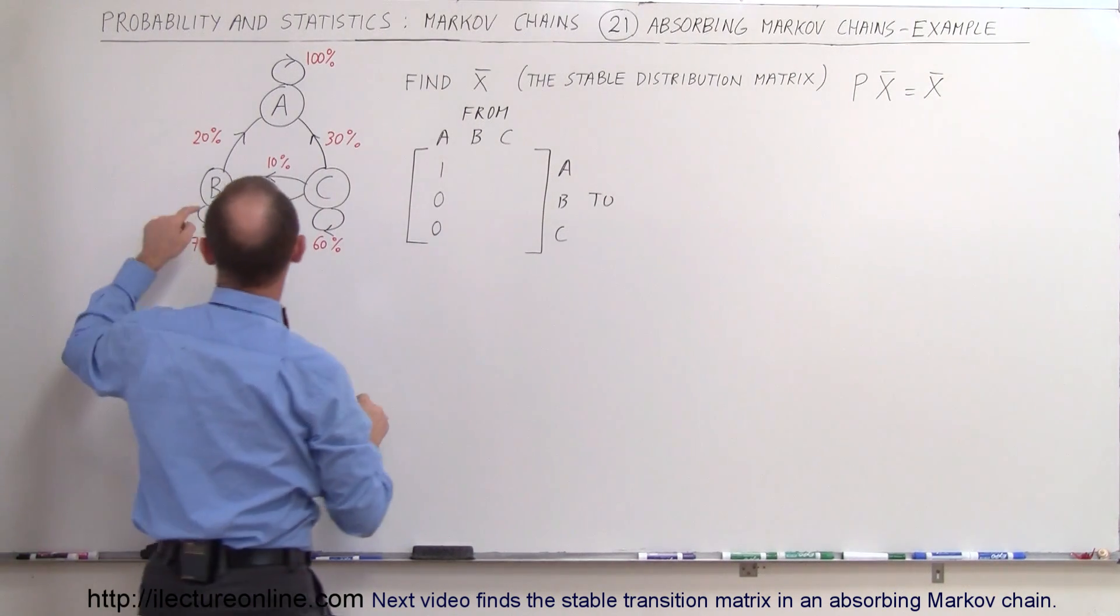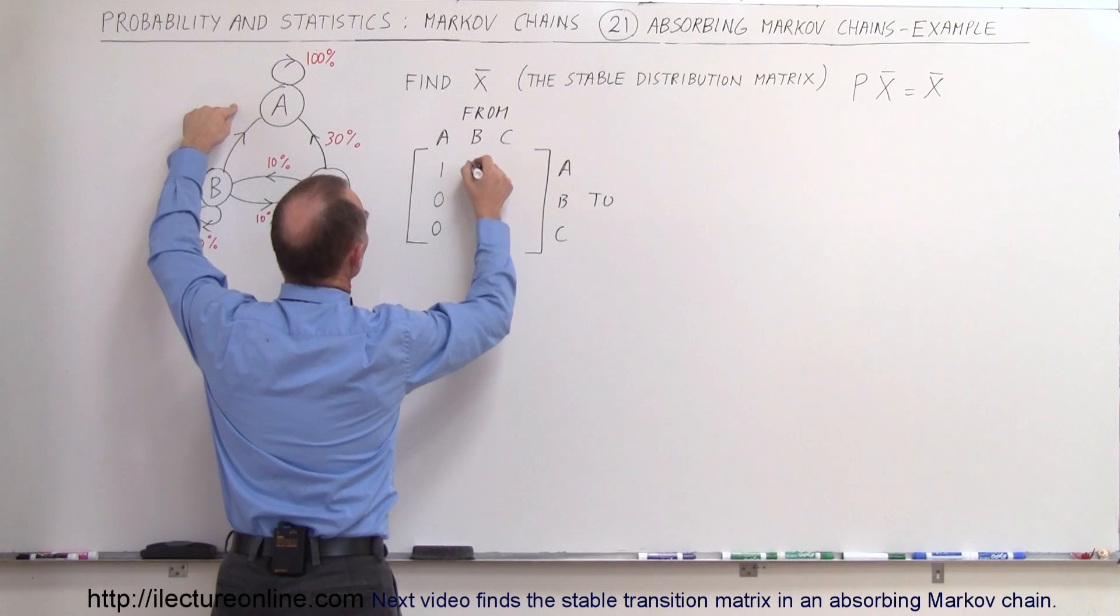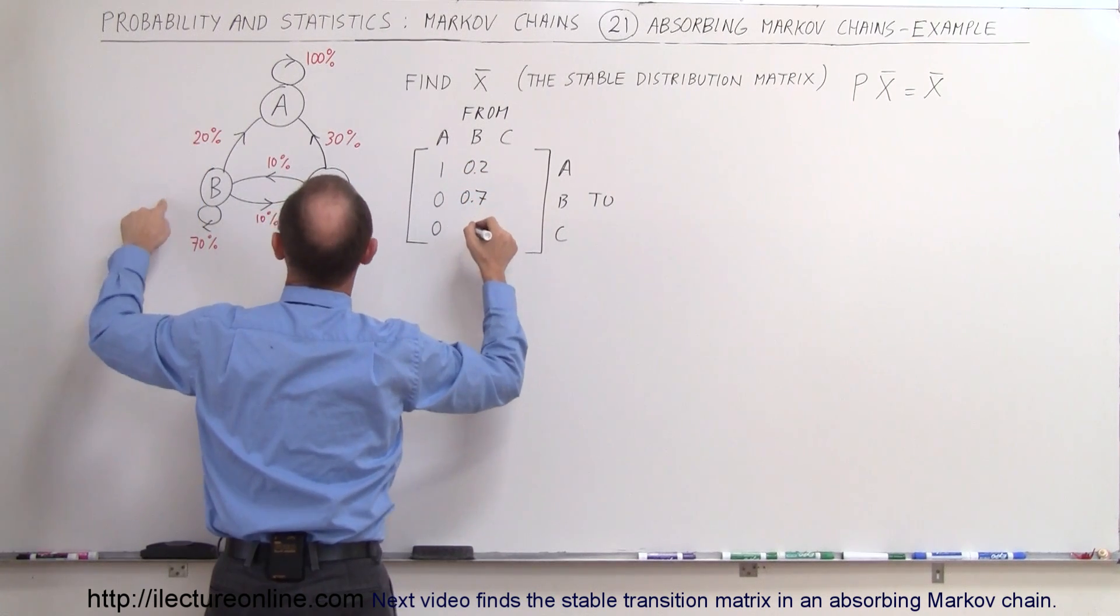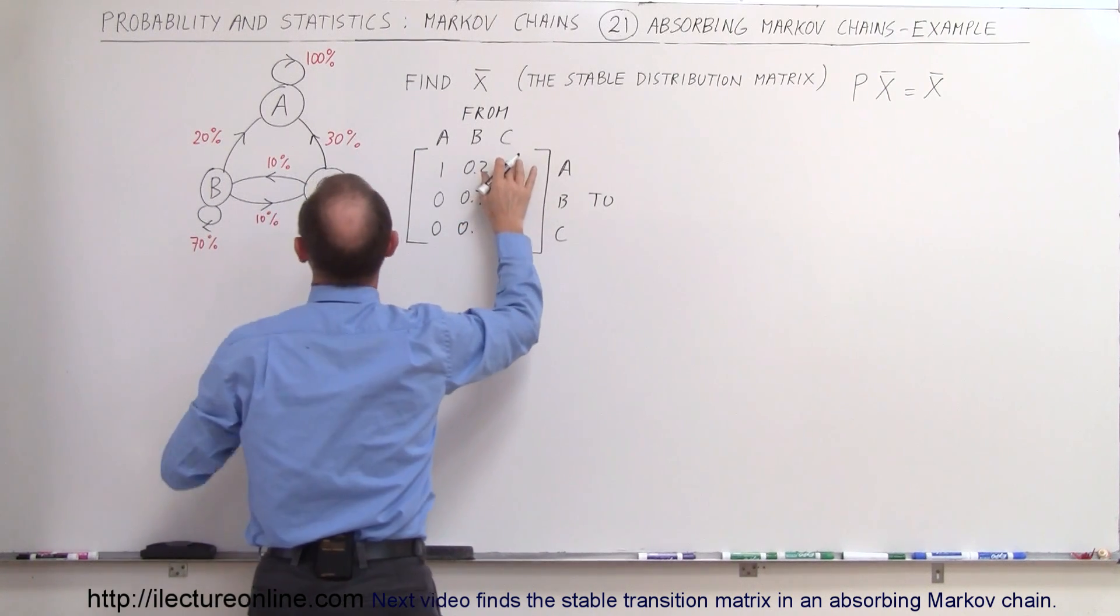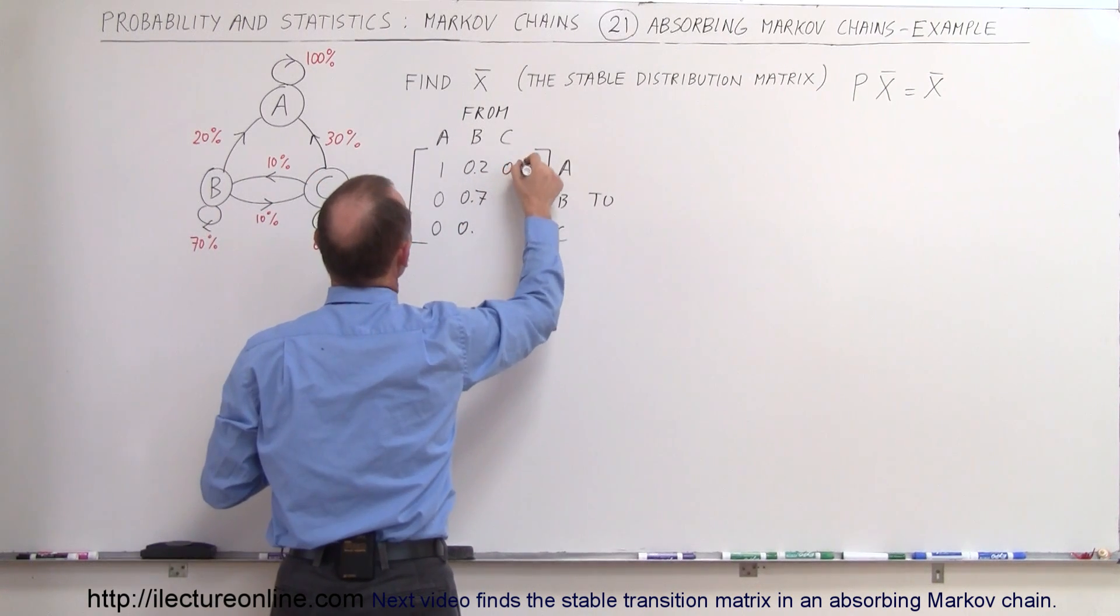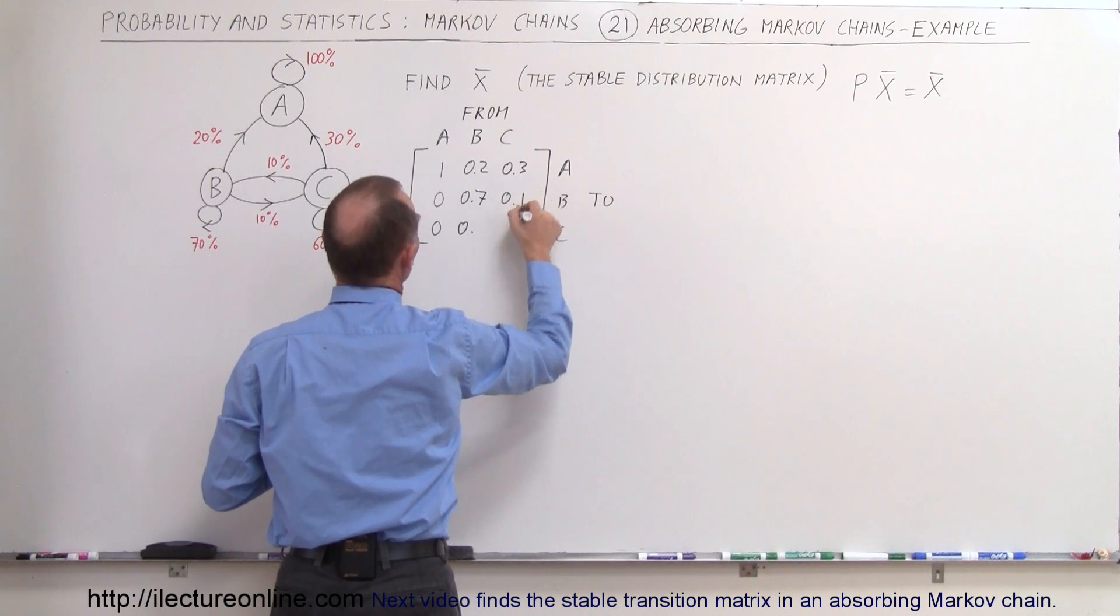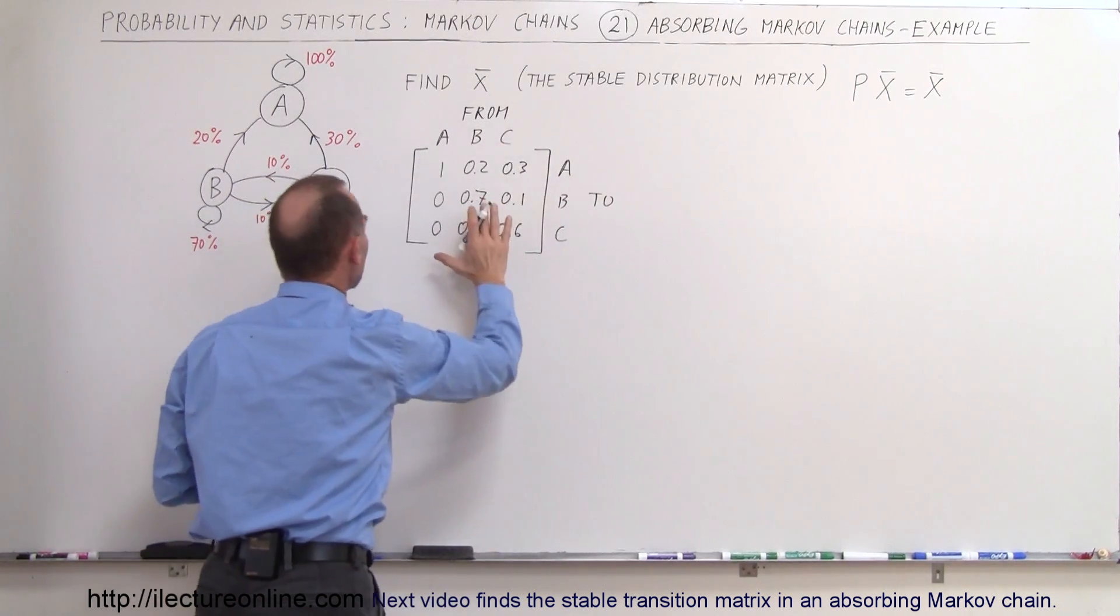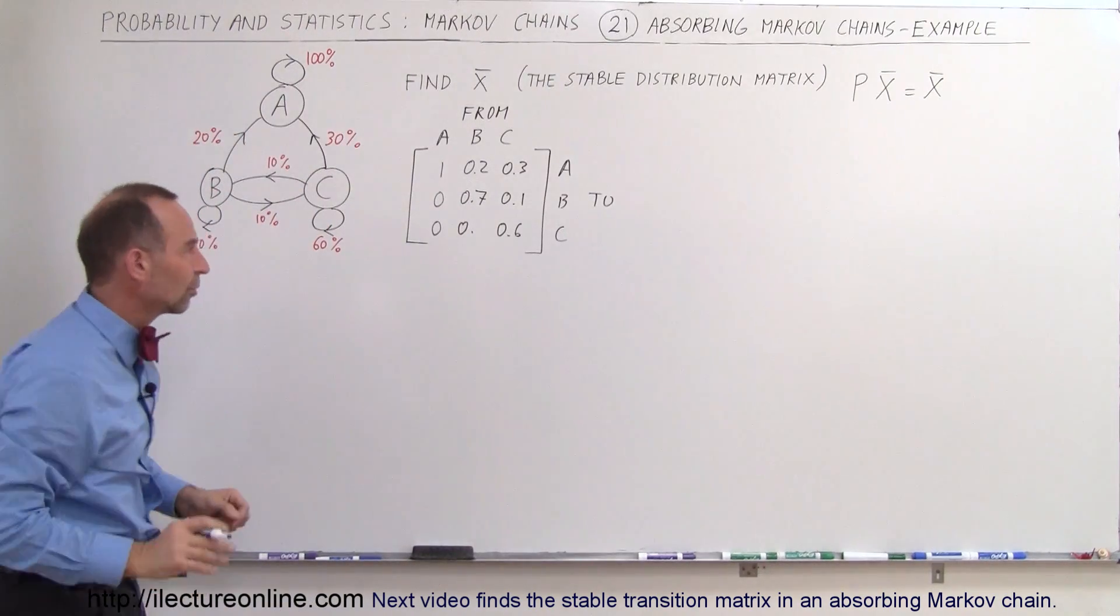Now from B to A we get 0.2, from B to B we get 0.7, that means from B to C it's 0.1. From C to A is 0.3, from C to B is 0.1, and from C to C is 0.6. So here's the transition matrix representing our situation.